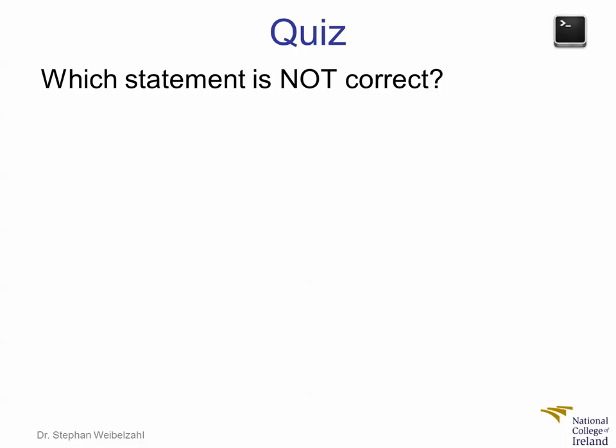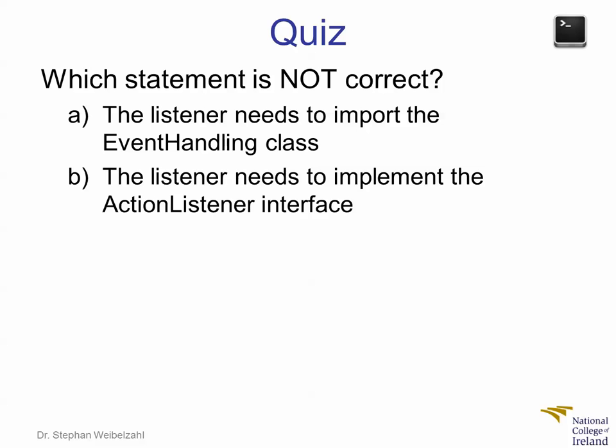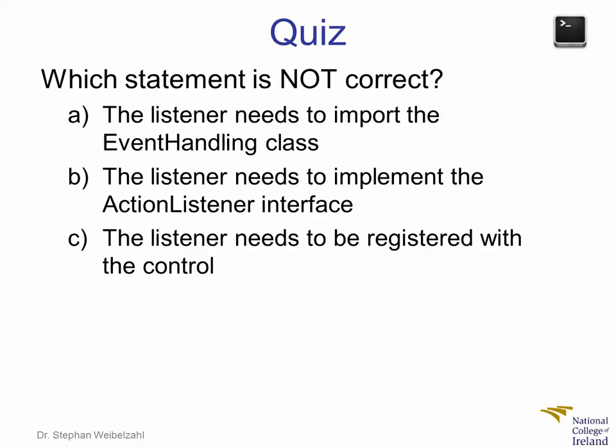So which of these statements is not correct? The listener needs to import the event handling class. The listener needs to implement the action listener interface. Or the listener needs to be registered with the control. Which one is not correct?